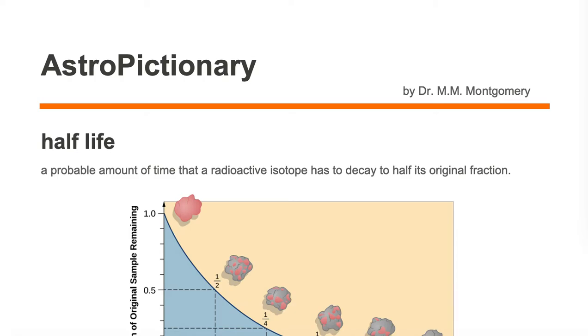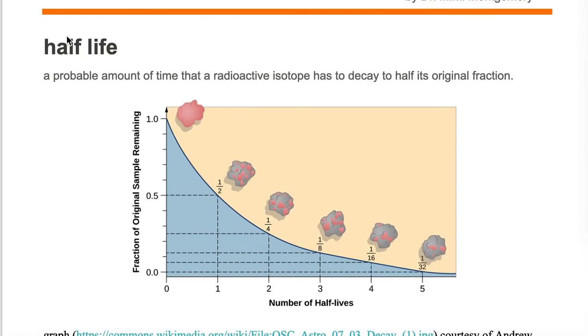Half-life is a probable amount of time that a radioactive isotope has to decay to half its original fraction. Half-life is an amount of time, so we're looking for a time unit. Specifically, we're looking for the amount of time a radioactive isotope has to decay into half of its original fraction.